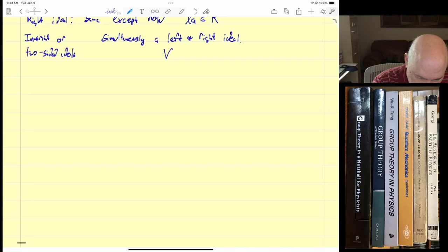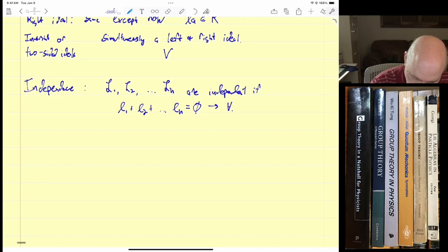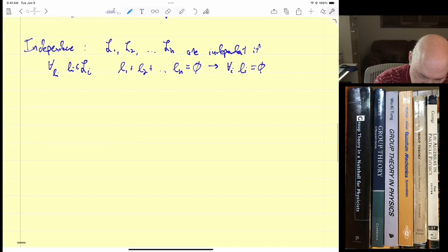For the rest of this thing, I'm always going to focus on left ideals, but the same definitions and everything else would apply to right ideals. So let's talk about independence. So L1, L2, LH, this is the same linear algebra definition, standard. If L1 plus L2 plus LH is equal to the null element implies for all I, LI equal null element. So here, this is a for all LI, LI is in script LI, LI is in the ideal.